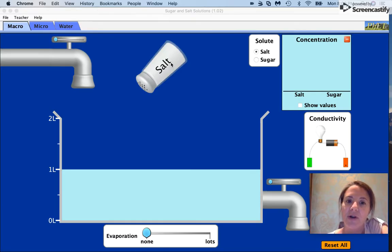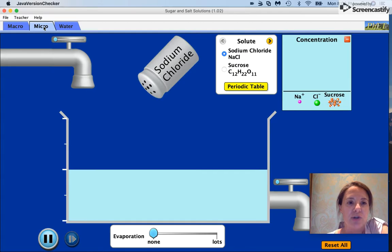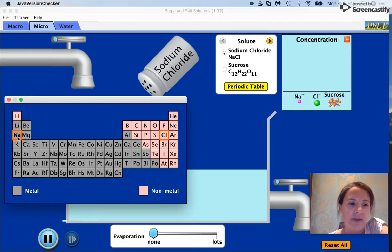We've got our table salt which is made up of sodium and chlorine, and we've got our sugar which is made up of carbon, hydrogen, and oxygen. So let's just take a quick peek there.